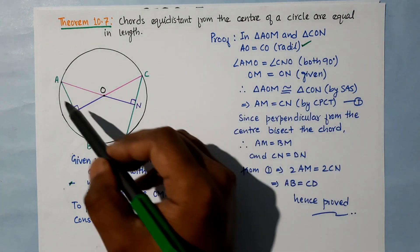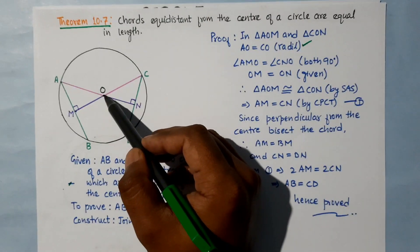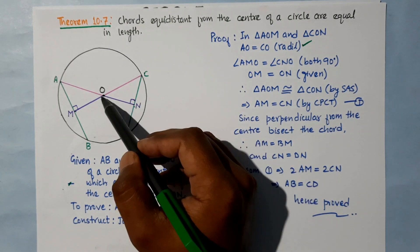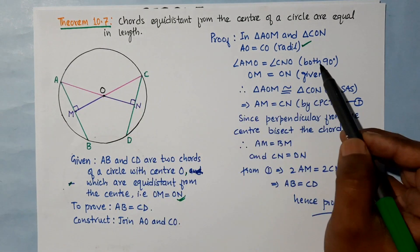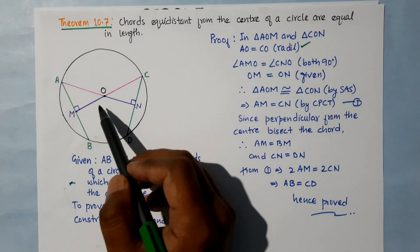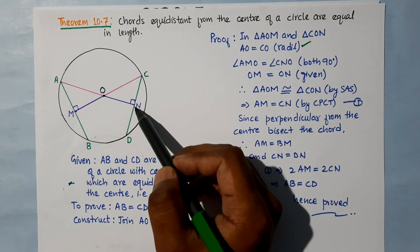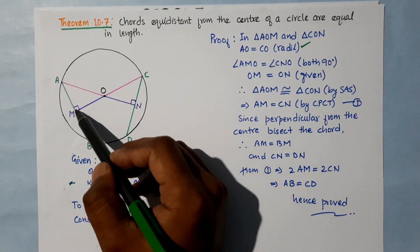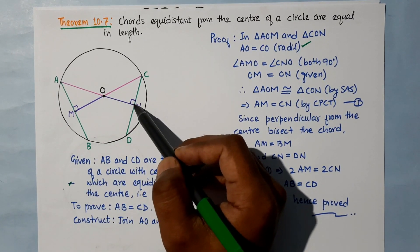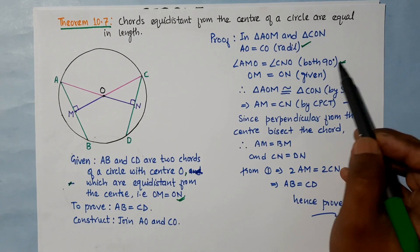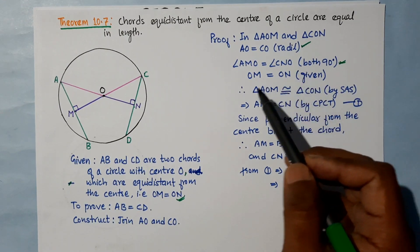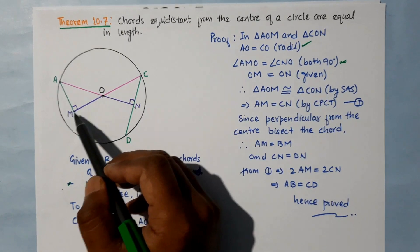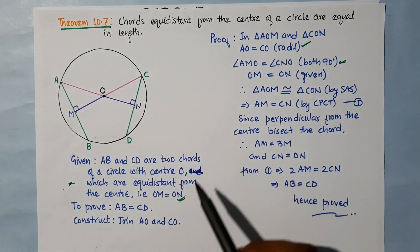Second, angle AMO is equal to angle CNO, both are 90 degrees. Why is it 90 degrees? Because OM and ON are the distances of chords AB and CD respectively, and the distance is always perpendicular.